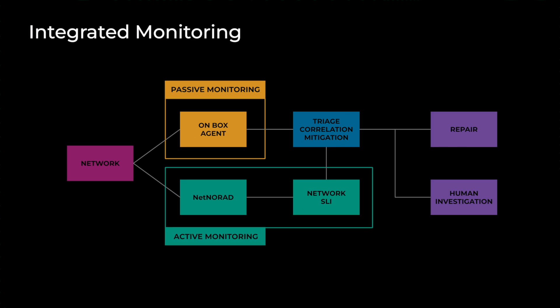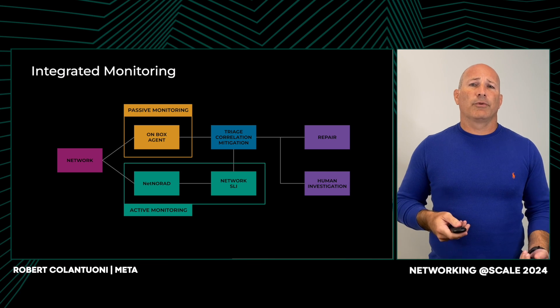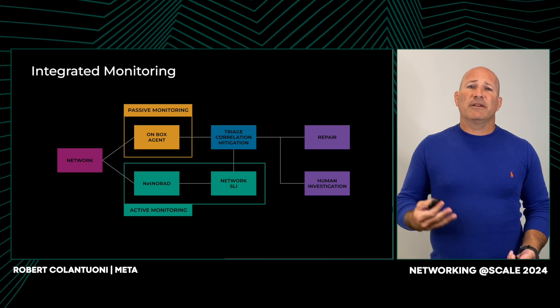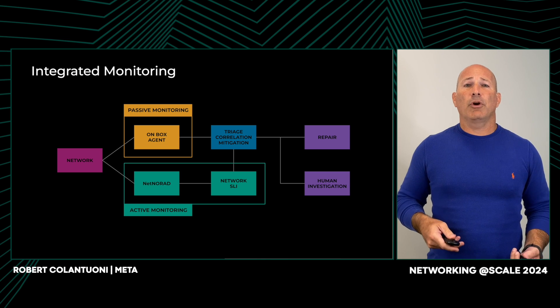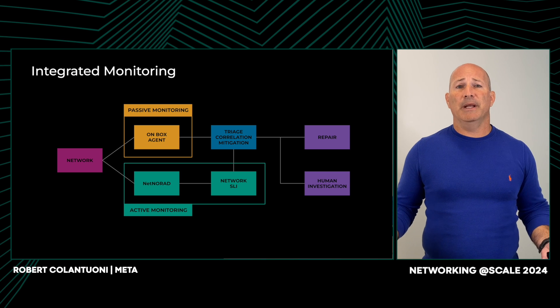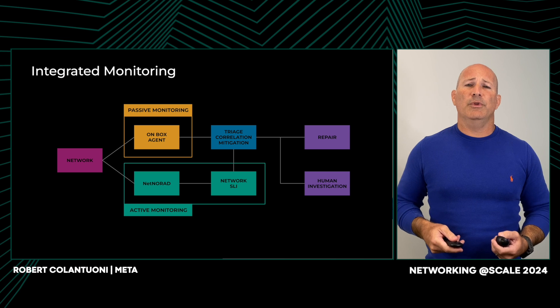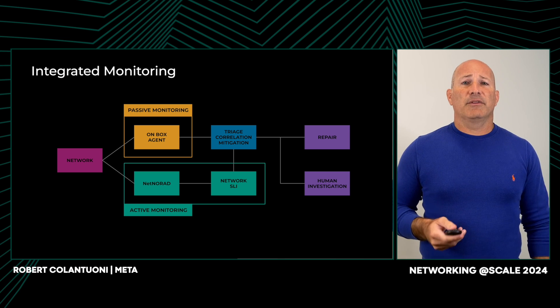At a high level, this is the flow of holistic network management. By using active and passive techniques in parallel, we create a robust system that leverages the strengths of each method. In the passive path, on-box agents unify detections and send them to our triage and correlation pipeline and eventually to repair. In the active path, our approach involves analyzing performance based on good and bad minutes evaluated against established reliability thresholds. We use NetNorad — our distributed packet loss measurement platform — as a data source for our robust SLI framework. The network SLI framework translates the data from NetNorad into distinct events; each minute of network delivery per scope is deemed either good or bad depending on whether it exceeds established thresholds.